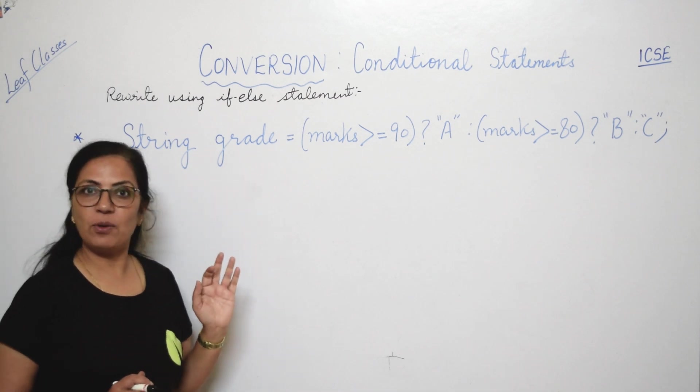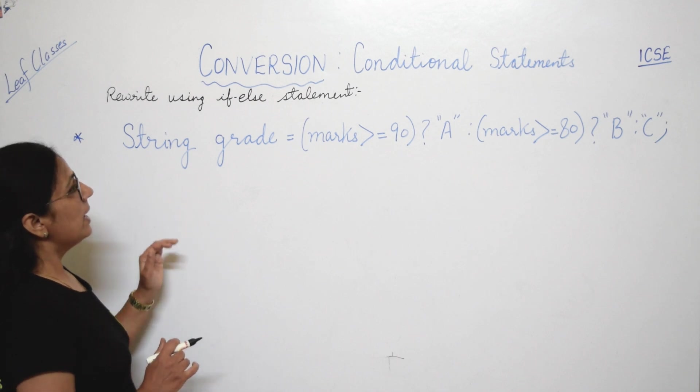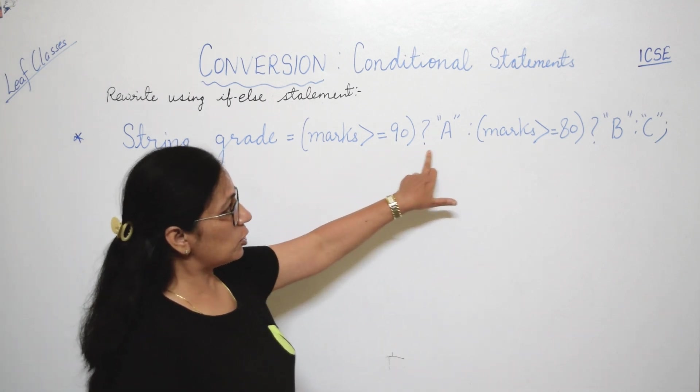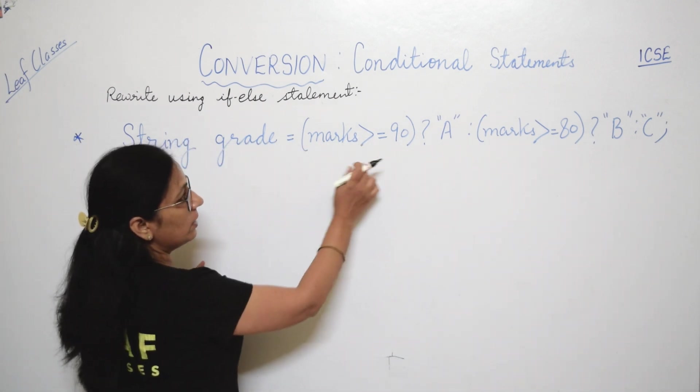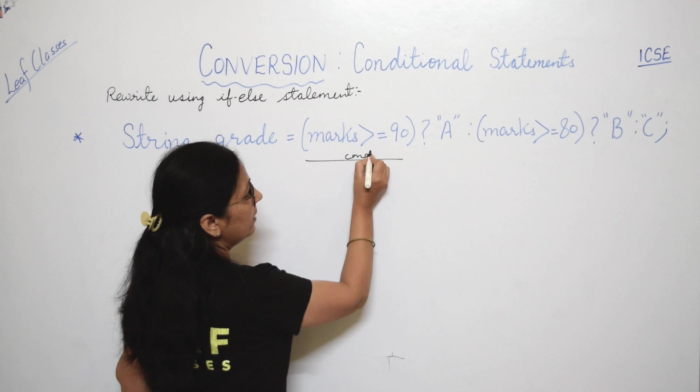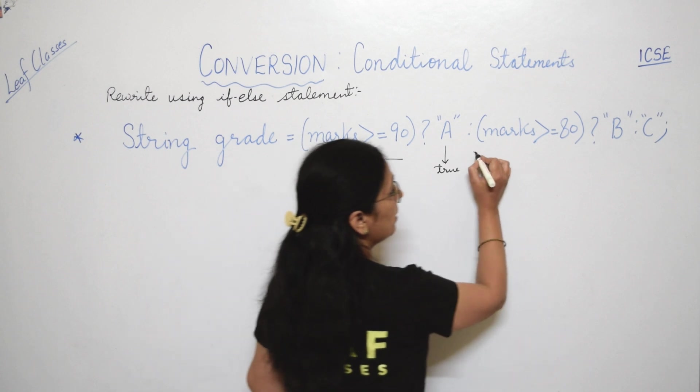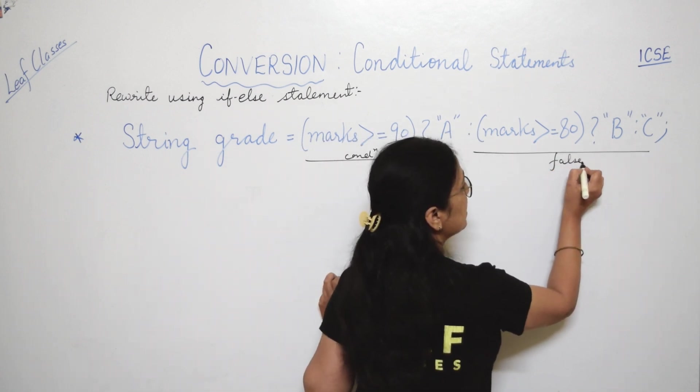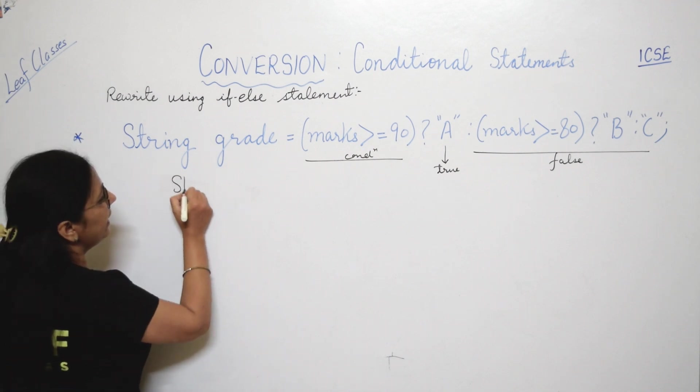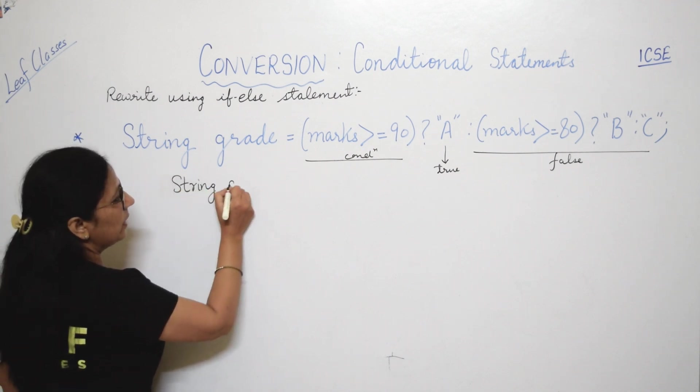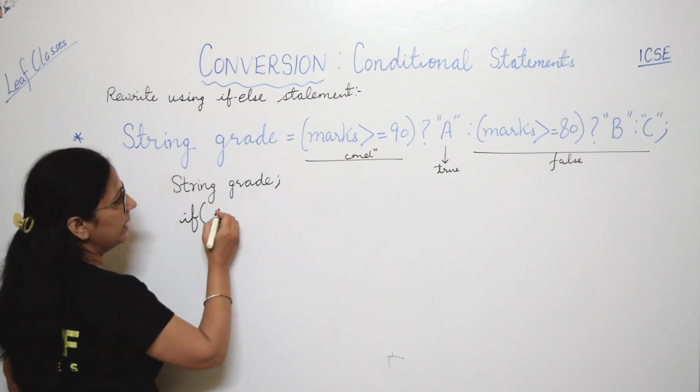Children, this question I have taken from previous year board questions and this question already I have solved in our PYQ series. So here if you notice, here also one question mark is there, here also colon is here also, here also. So this is the condition. Condition is this, and if this condition is true, this will be executed. And if this condition is false, in that case this will be executed, right? Now let us see how it will work. Declare the data type of grade variable, that is string type. So string grade I have written. What we will write with if statement? Condition. Condition kya hai?